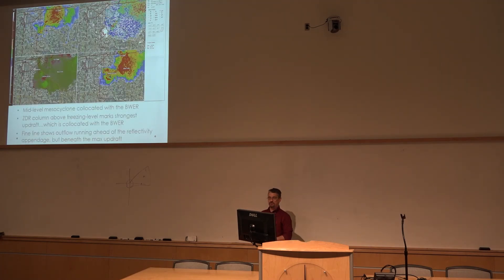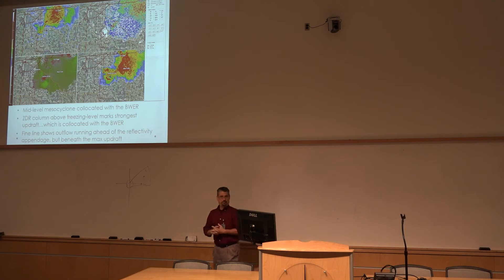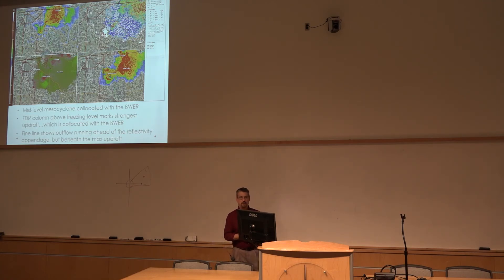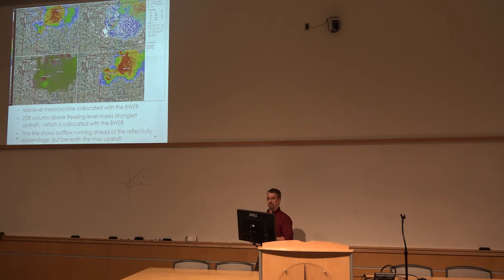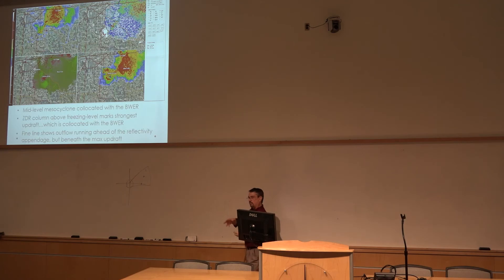I like this one from a standpoint of pulling the old in with the new. This is a storm over Tulsa. You've got low-level reflectivity at 0.5 degrees in the upper left, and ZDR in the upper right. We're a little bit above the freezing level, so we're looking for ZDR columns.